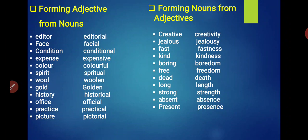Now forming nouns from adjectives. Creative becomes Creativity. Jealous becomes Jealousy. Fast becomes Fastness. Kind becomes Kindness. Boring becomes Boredom. Free becomes Freedom. Dead becomes Death. Long becomes Length. Strong becomes Strength. Absent becomes Absence. Present becomes Presence. So bachche, it's very easy. With the help of suffixes and prefixes, we can form parts of speech.